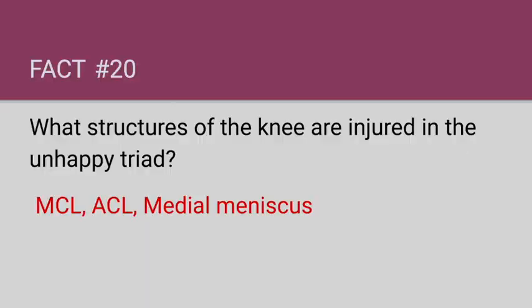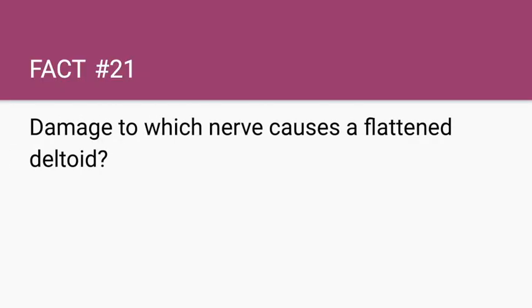Damage to which nerve causes a flattened deltoid? The axillary nerve. Remember that fracture of the surgical neck of the humerus or anterior humerus dislocation can cause damage to the axillary nerve, and one of the ways this can present is with a flattened deltoid.